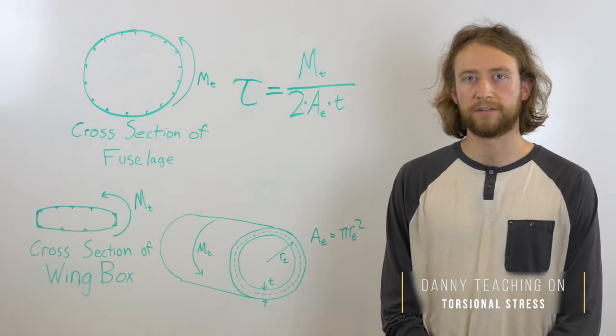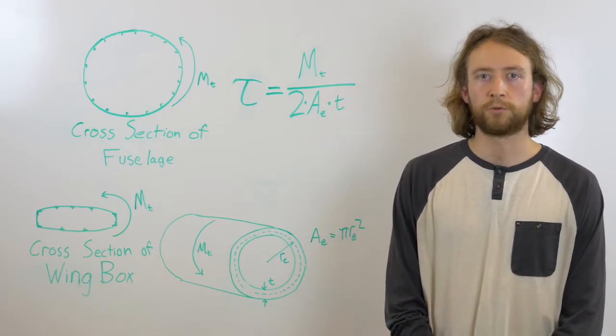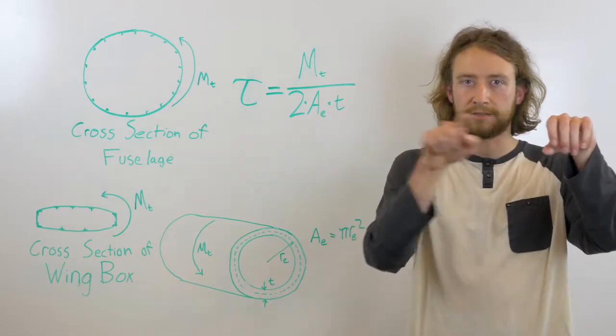In the analysis and design of an airframe, it's very important to consider the effects of torsion. Torsion is when you have a structure that is twisted along its longitudinal axis.